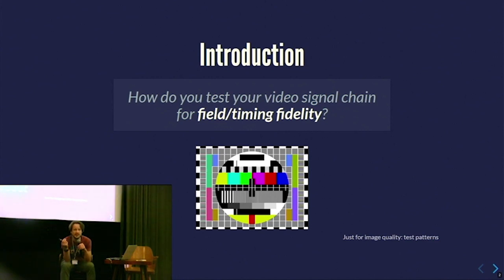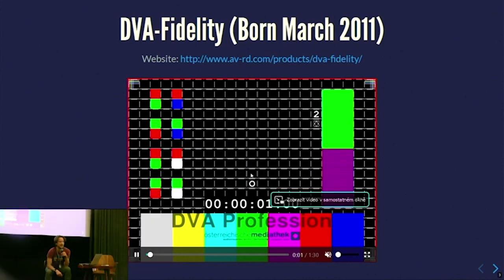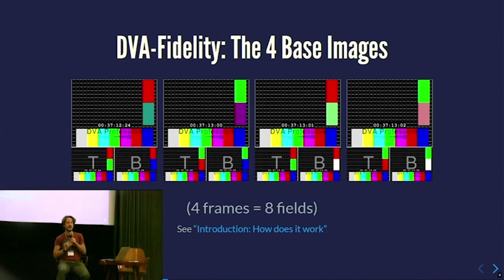How do you test a video signal chain for field timing? There's a test pattern for testing image quality. What I did was build a video to test for interpolations in timing: is a frame inserted? Is a frame dropped? Is a frame reversed? I built and designed this for basically testing and debugging whether they fixed their firmware issue in the ADC.